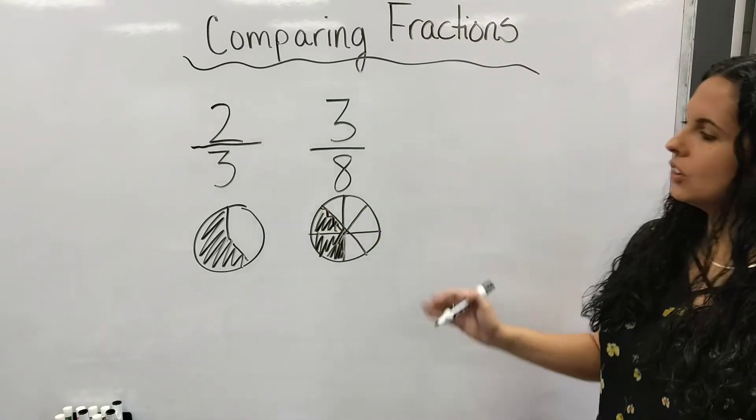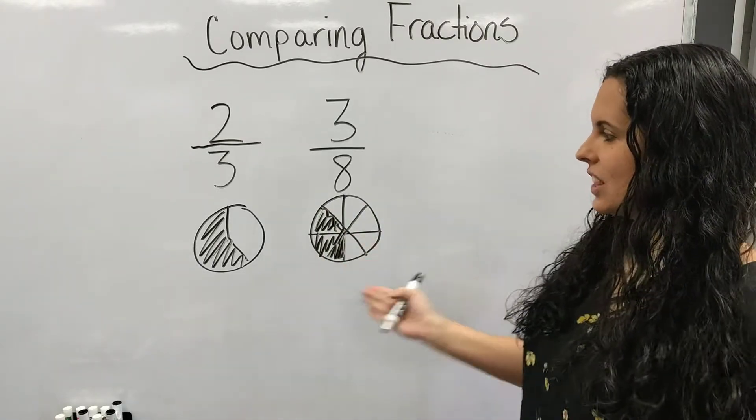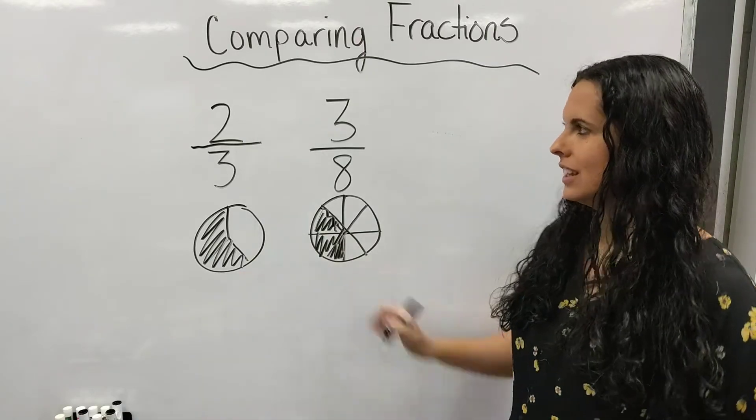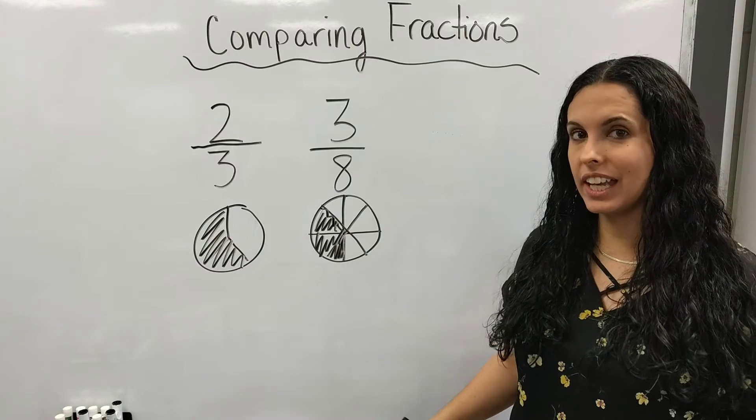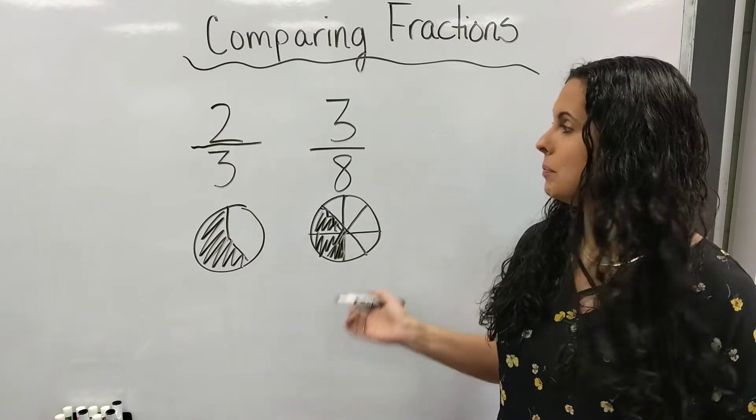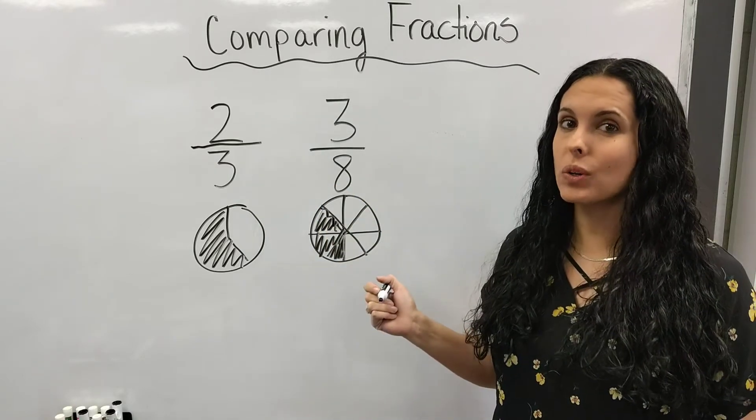So when I look at my fractions, I can clearly see that this has got more shaded in than this one. Now, sometimes you're going to get a fraction that's going to be difficult to draw. Maybe if your denominator was fifths or sevenths.